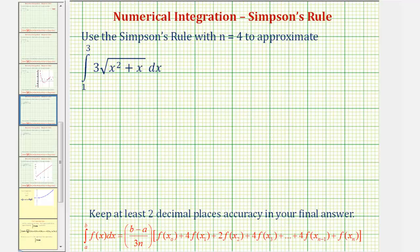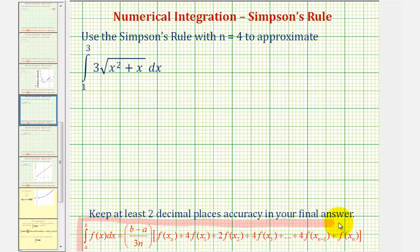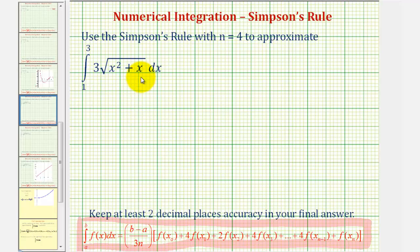Welcome to an example of numerical integration. We want to use Simpson's rule with n equals four to approximate the given definite integral. To do this, we'll be applying the formula shown below. When applying Simpson's rule, we're actually using quadratic functions to approximate the given definite integral.